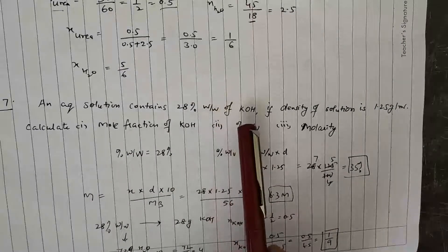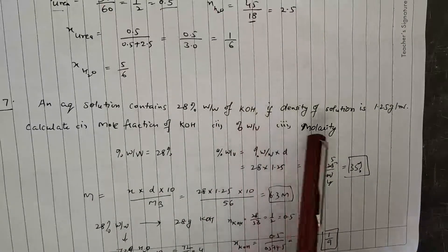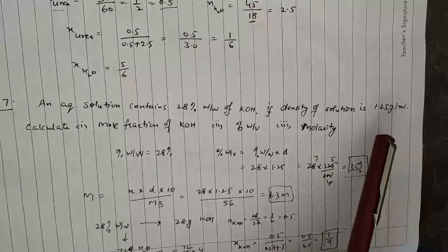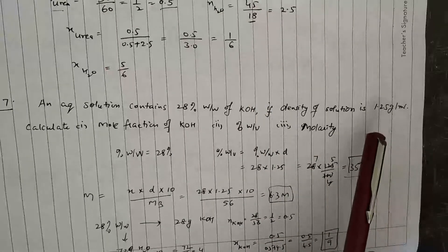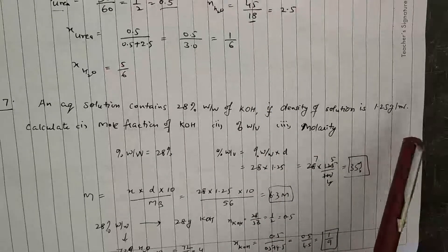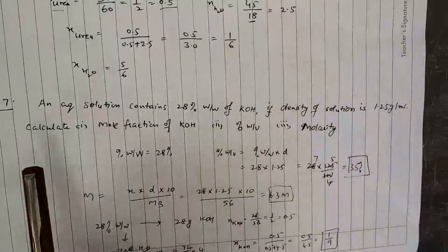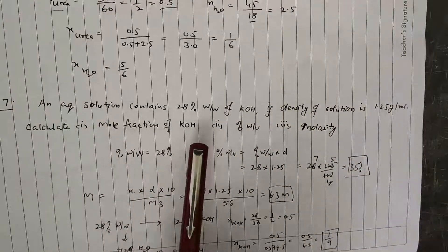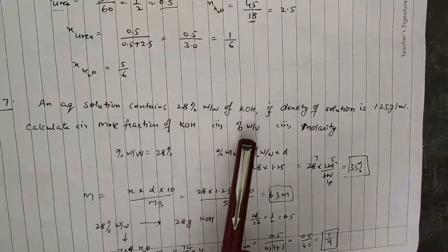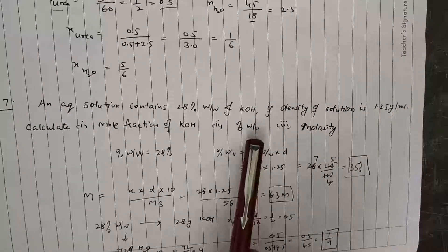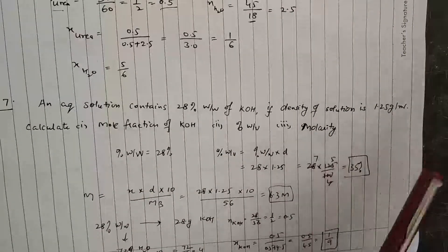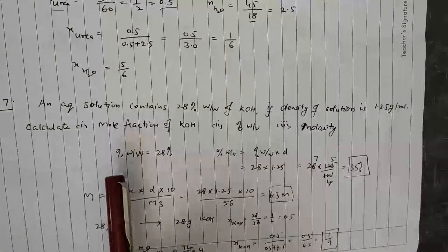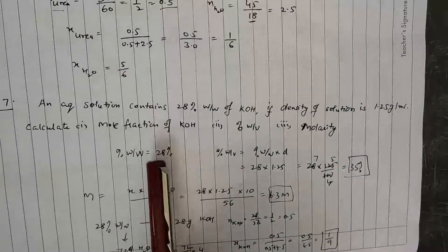The density of solution is 1.25 g/mL. We need to calculate: (1) mole fraction of KOH, (2) percentage weight by volume, and (3) molarity. The percent weight by weight is 28%, which is directly given.